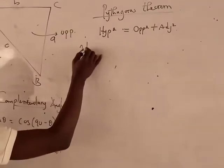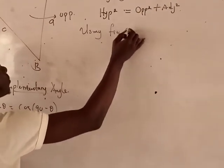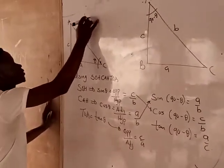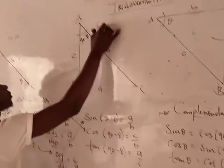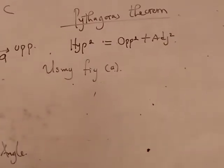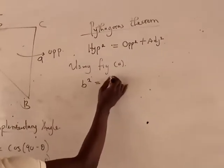Using figure A, so if we call this figure A and this figure B, by using figure A the hypotenuse B squared equals C squared plus A squared.